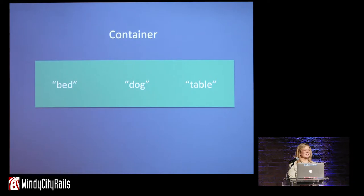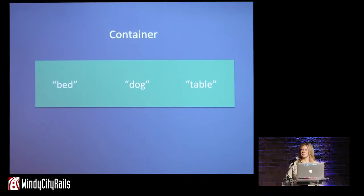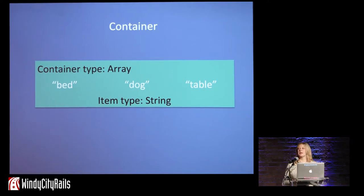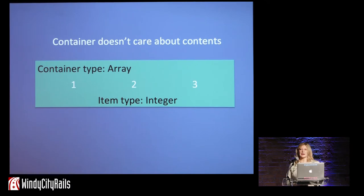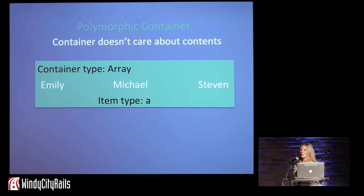Let's step up a level. We've done functions — everybody's worked with functions and understands what a function is. Now let's talk about containers. Here we've got a bed, a dog, and a table — they're in a container. Our table, or the thing in our container, is a string, and our container is of type array. I've got an array of strings. Here my array has strings, here it has integers, here it has persons. What are we noticing? My container does not care about the values that are inside of it.